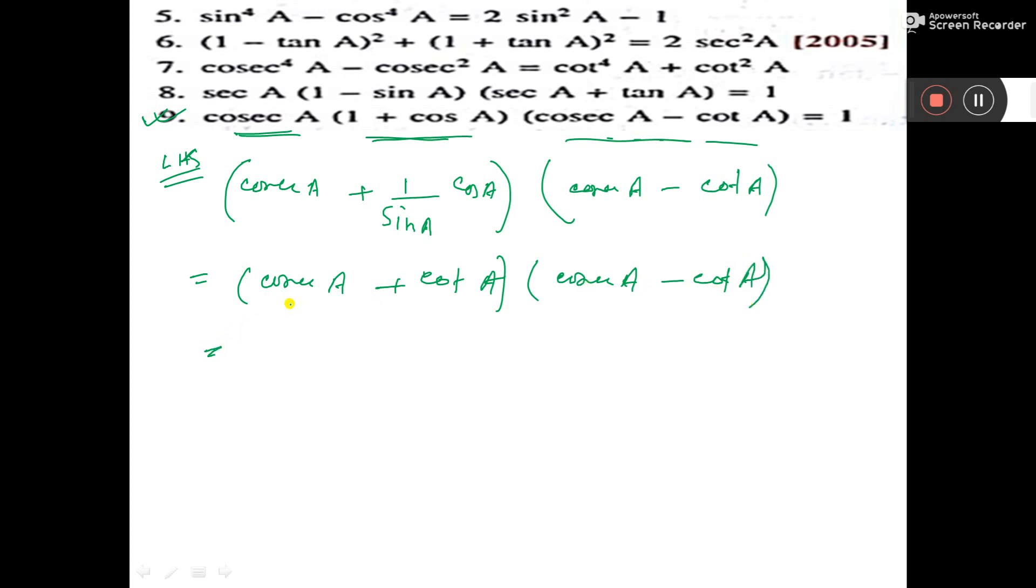Now here is A plus B into A minus B. See, that is A square minus B square.